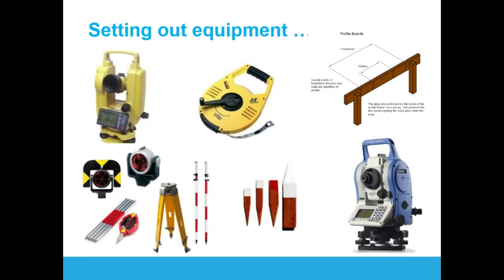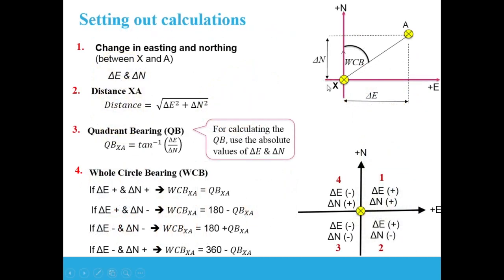The equipment used for setting out is the same as for surveying: total stations, tape measures, tripods, reflectors, prisms, wooden pegs, etc. To set out a point, your total station is set up over station X, and your task is to set out a target point on the ground. This point might be a corner of a building, a centerline of a road, or any kind of structure.